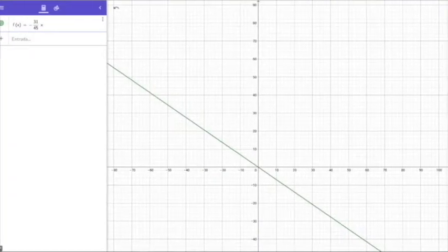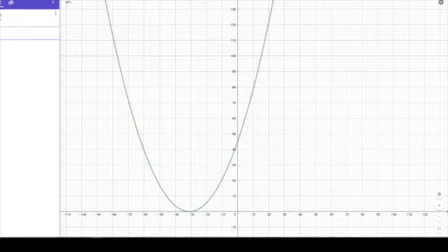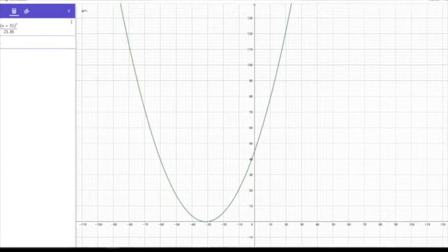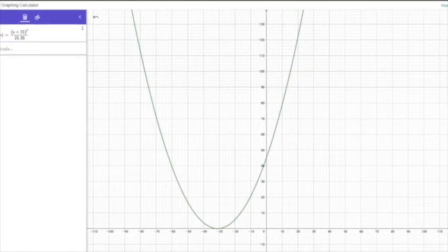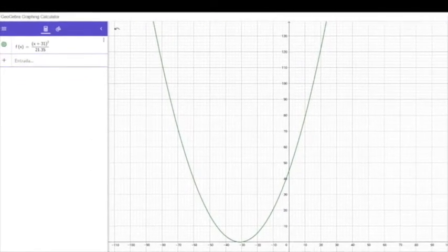For us to make the linear ramp, we used the equation y equals minus 31x divided by 45. For the Parabolic graph, we used the equation y equals x minus 31 squared divided by 21.35.